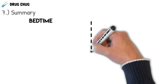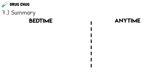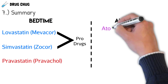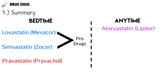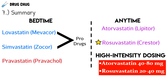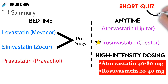Here's a quick summary: bedtime statins include lovastatin (Mevacor), the first statin on market; simvastatin (Zocor) — both prodrugs; and pravastatin (Pravacol). Anytime statins are atorvastatin (Lipitor), the most lipophilic and most likely to cause myopathy, and rosuvastatin (Crestor), the most lipophobic and most potent, least likely to cause muscle pain. Both atorvastatin at 40–80 mg and rosuvastatin at 20–40 mg are high-intensity statins.